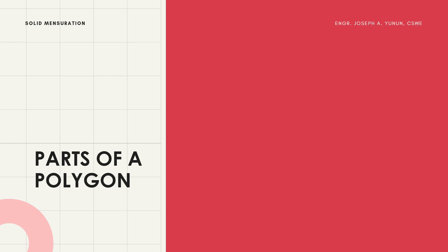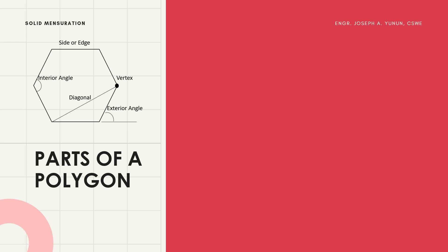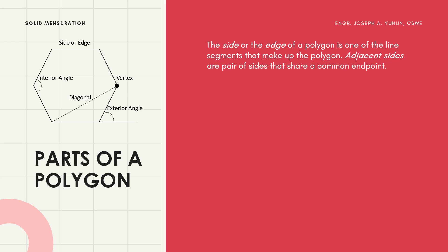You should be familiar with the parts of a polygon. In the given figure — a hexagon — you have the side or edge, interior angle, diagonal, vertex, and exterior angle. The side or edge of a polygon is one of the line segments that makes up the polygon. Adjacent sides are a pair of sides that share a common endpoint.